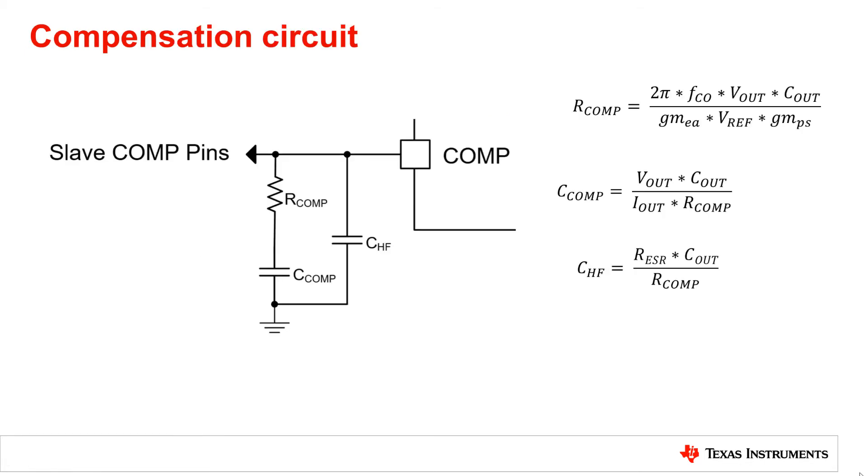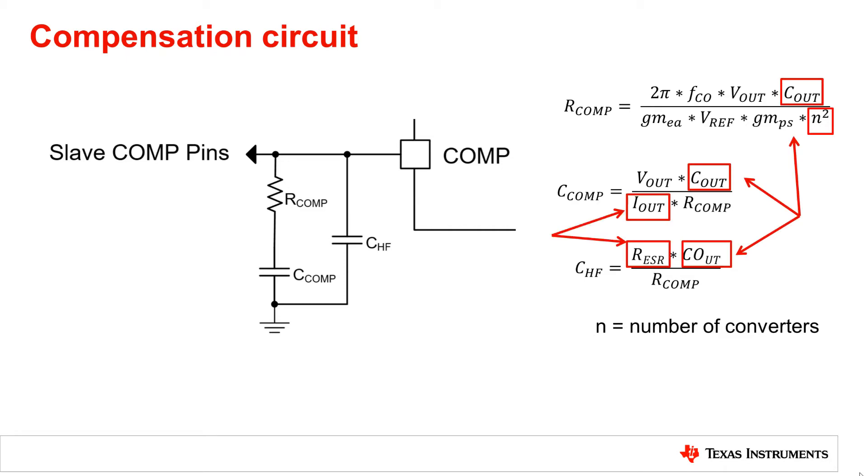The last change is to the compensation resistors and capacitors. The resistor equation needs to have its GMPS and GMEA multiplied by the number of converters n. This means the equation needs to be divided by the number of converters squared. Note that both the Cout in this equation and the following equations, as well as the Iout and the RESR, are the total values from all the converters in parallel.